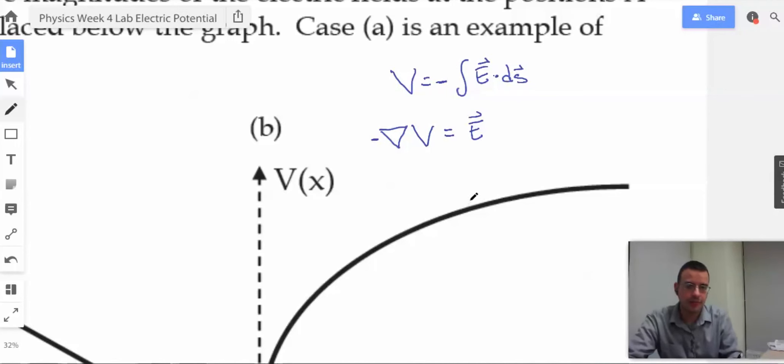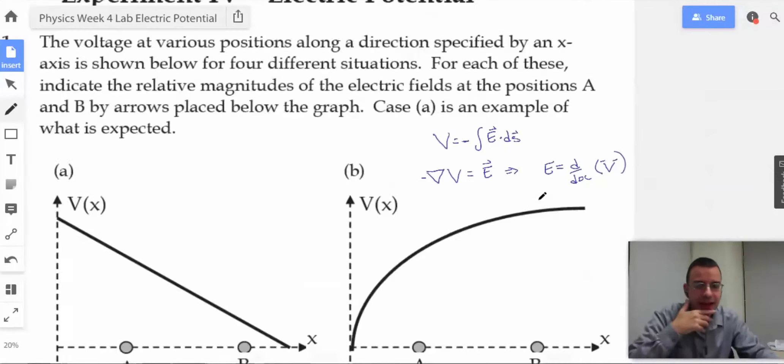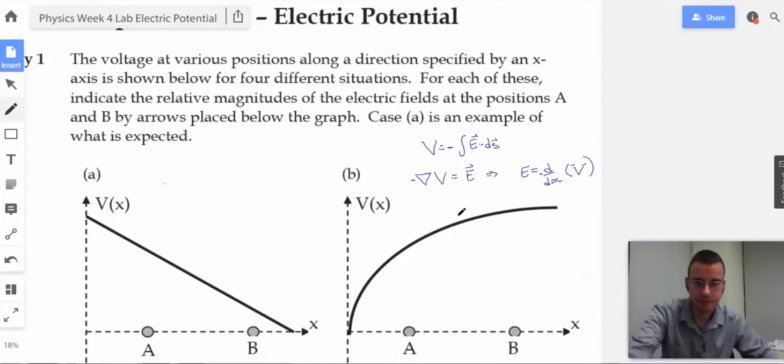So it would be looking like this: negative divergence of voltage equals electric field. And since in this case voltage is a function of x, we will have electric field equals derivative with respect to x of voltage. And specifically, it will be negative because there's a negative in there.